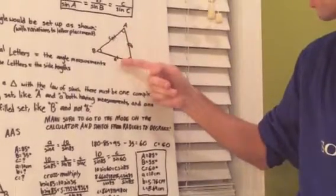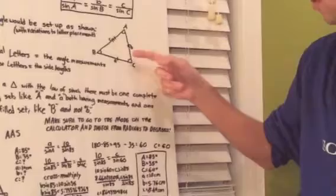Across from capital A would have to be lowercase a, across from capital B, lowercase b, so on and so forth.